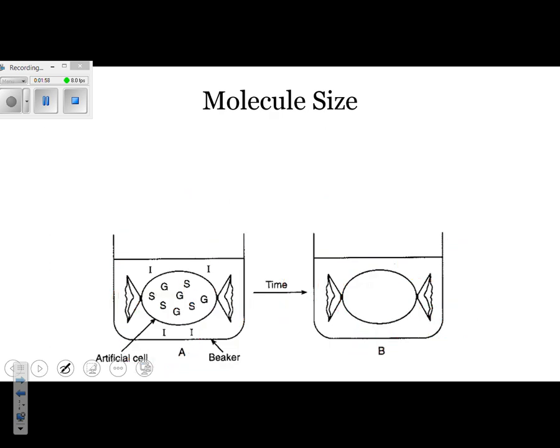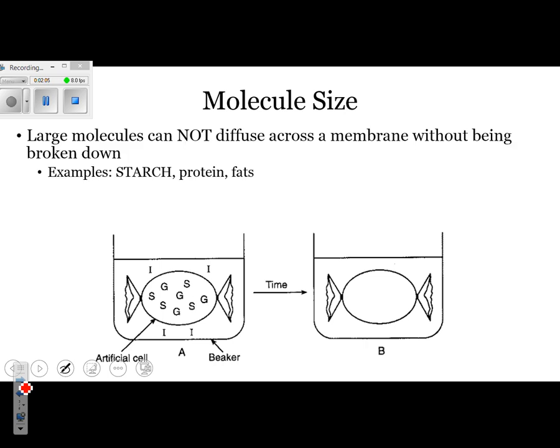Next topic we need to know about in terms of diffusion is molecule size. There are large molecules and small molecules. Large molecules cannot diffuse across the membrane because there are pores that are tiny. Those large molecules cannot fit through. Examples include starch, proteins, and fats. Starch is going to be one of the most important ones because it was incorporated into the state lab.